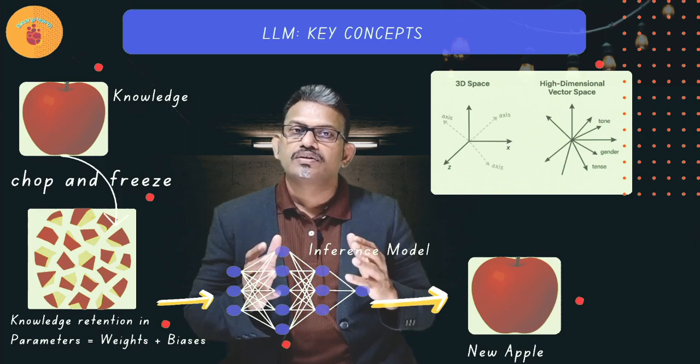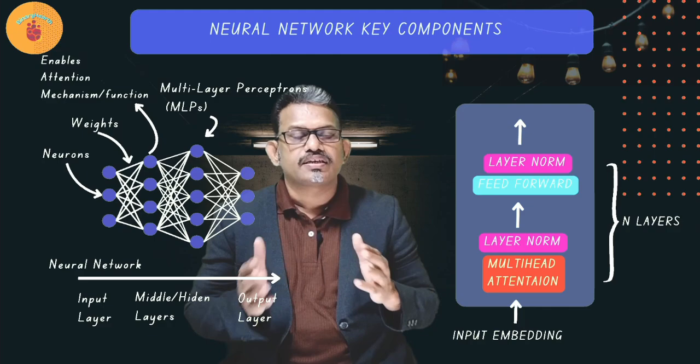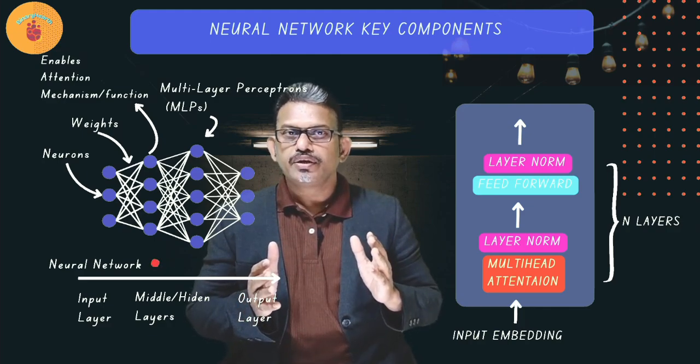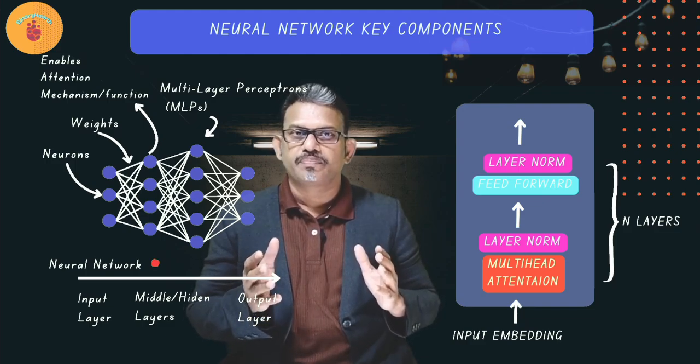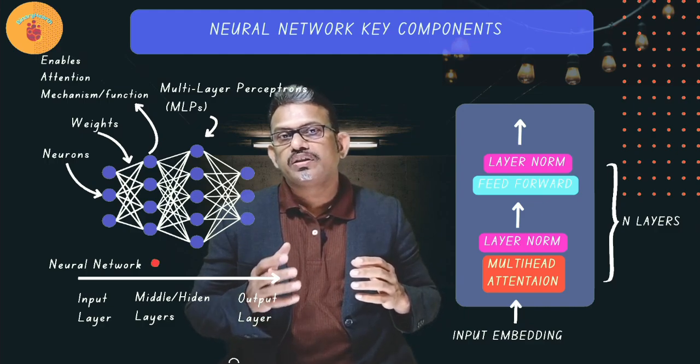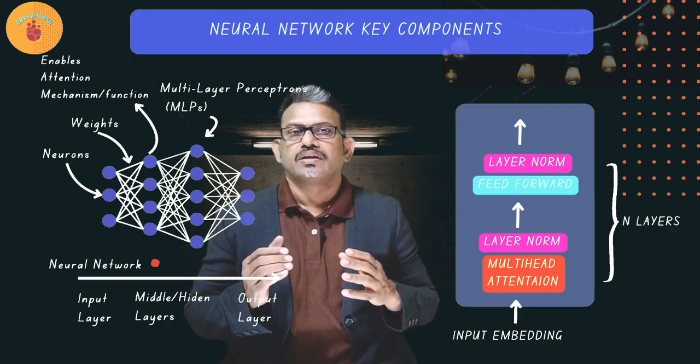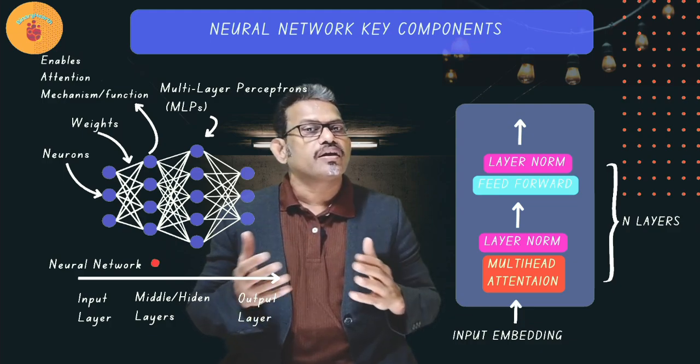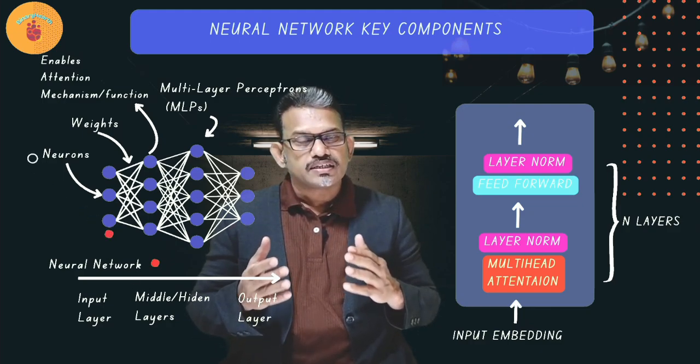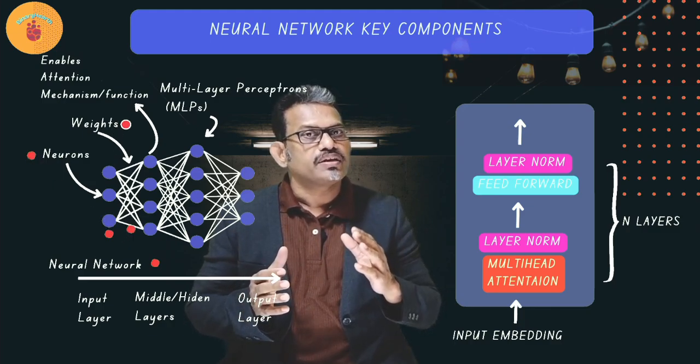Now, let's understand the components of neural network, which is the algorithm behind all this creation. It is based on transformer architecture. A neural network is a computational model inspired by the human brain, which is the underlying algorithm behind LLMs, designed to recognize patterns and make predictions. It consists of interconnected layers of nodes, called neurons, where each connection has weight that adjusts during the training.